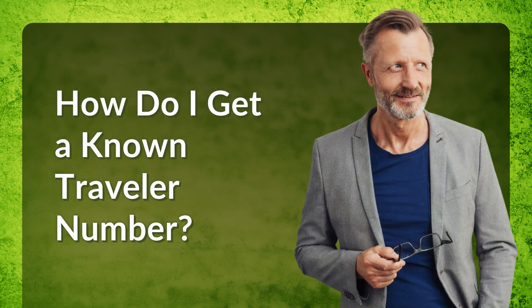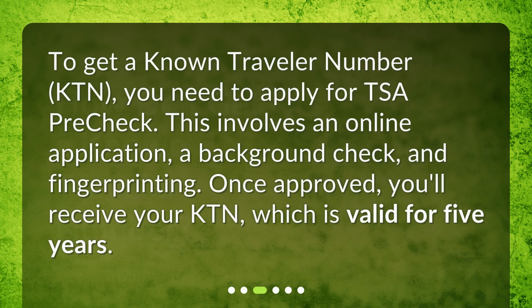How do I get a known traveler number? To get a known traveler number, or KTN, you need to apply for TSA PreCheck. This involves an online application, a background check, and fingerprinting. Once approved, you'll receive your KTN, which is valid for five years.